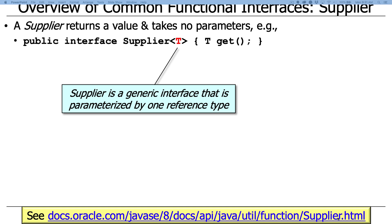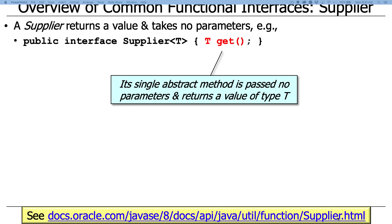Remember that it's only parameterized by a single reference type. Later, when we talk about custom functional interfaces, we'll see that we can overcome this limitation by having an arbitrary number of types depending on what we need. Supplier also has a single abstract method called get, which appears not to take any parameters and returns a value of type T. You can think of supplier as something that generates a result.